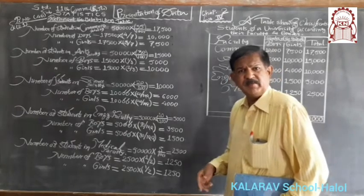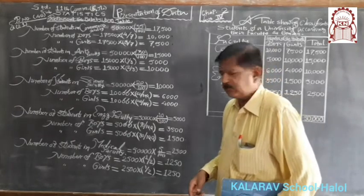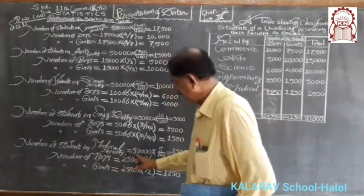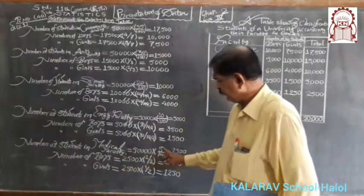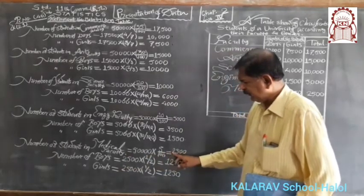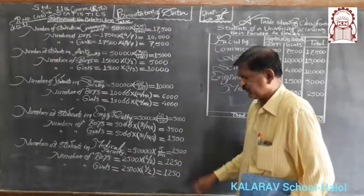In medical science faculty, 5% means 50,000 into 5 upon 100, which gives 2,500 students.